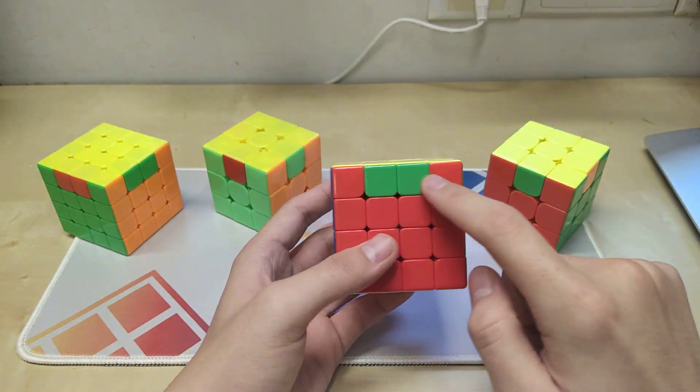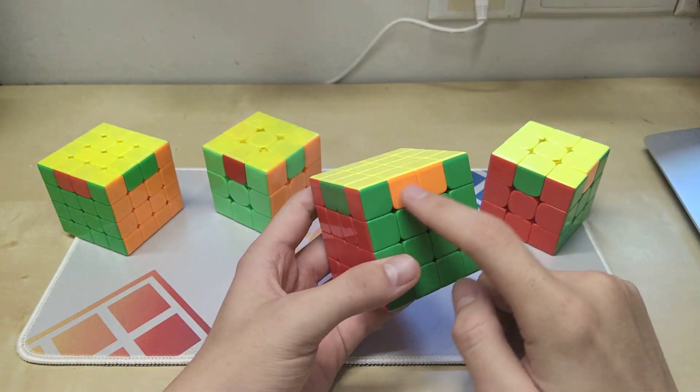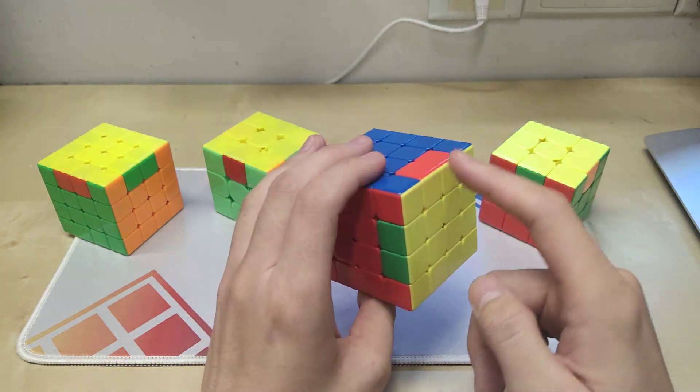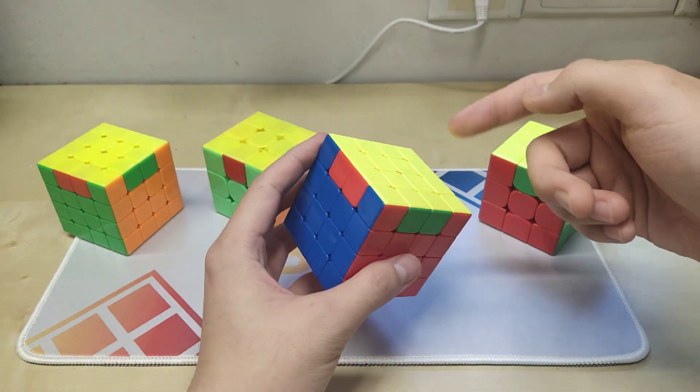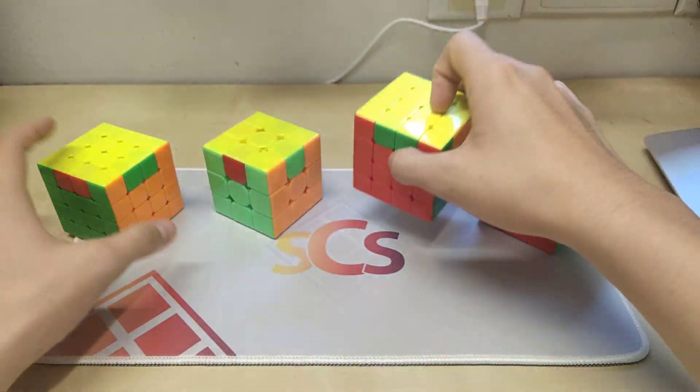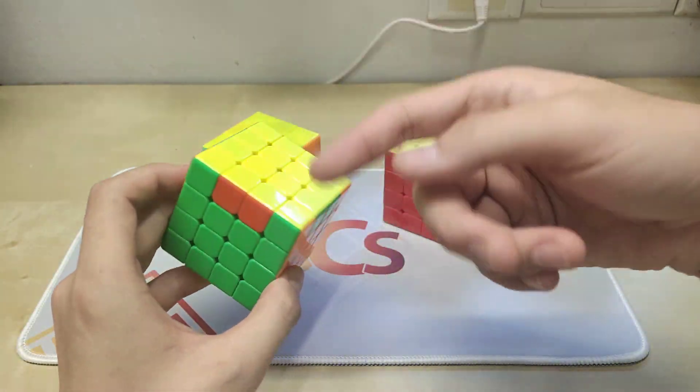For this case, green will go here, and orange goes here, blue goes here, red goes here. It is like an anti-clockwise case, and for this one, it is a clockwise case.